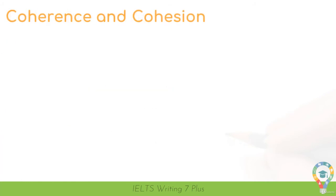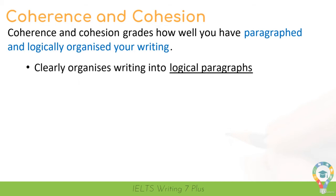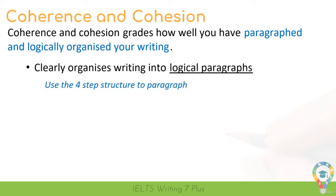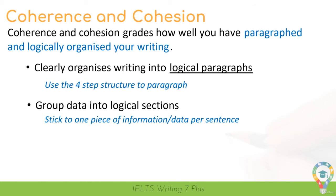Let's move on to coherence and cohesion. This is all about organising your writing into logical sections, and paragraphing is a great way to do this. We need to clearly organise our report into logical paragraphs. The best way to do this is to use the four-step structure I'll teach you in the next section of the course. You'll also need to group data into logical sections so that it's easier to follow your report. Generally, try to stick to one piece of information or data per sentence or section of your writing.